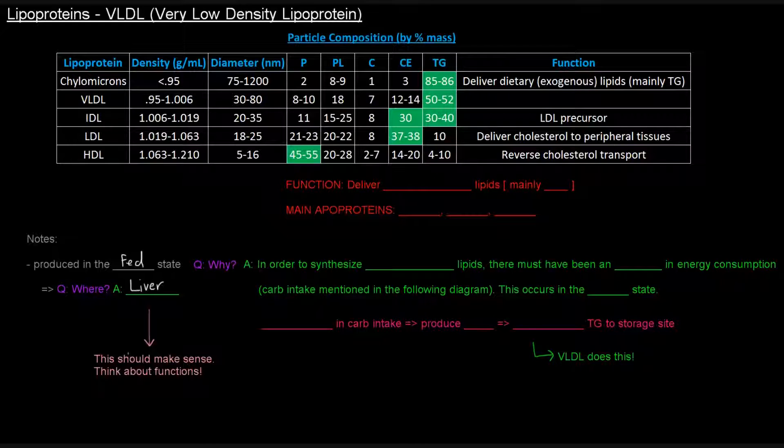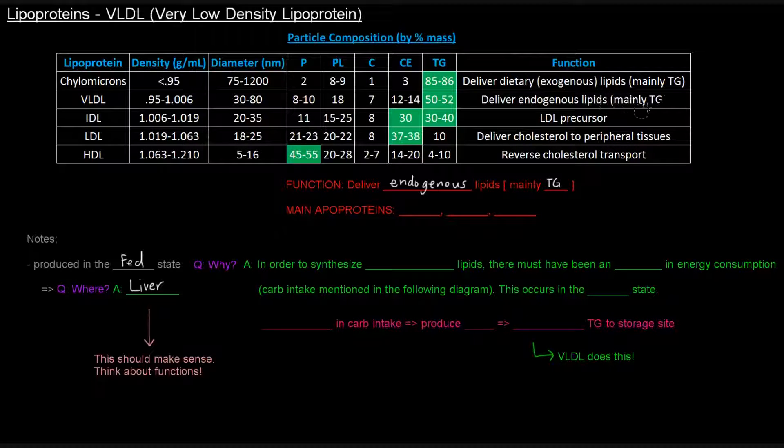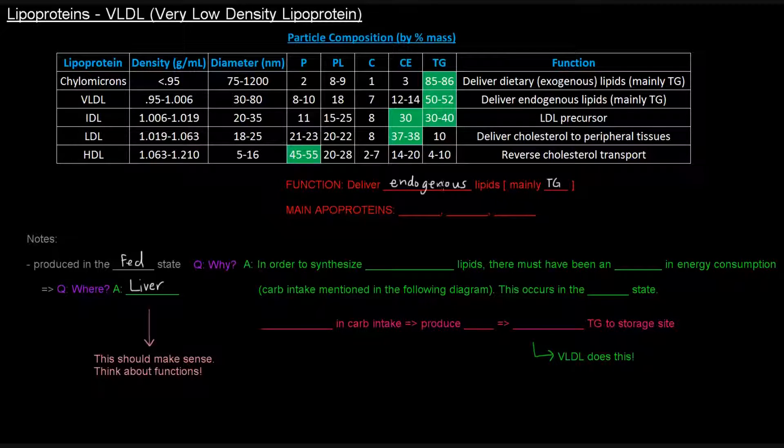So this should make sense to think about the functions. Let's talk about what the function is. The function is to deliver endogenous lipids, mainly triglycerides. So it delivers endogenous lipids, which means these are lipids that are synthesized in our bodies, primarily by the liver. So this should make sense, because talking about synthesizing these lipids in our bodies is going to be done in the liver.